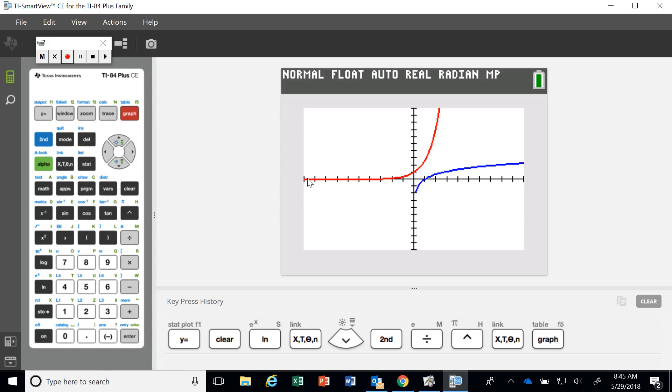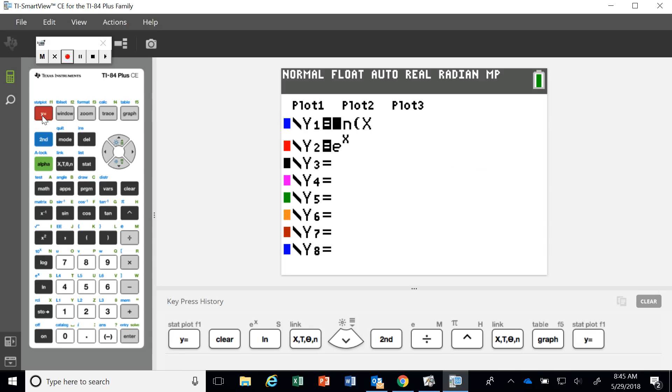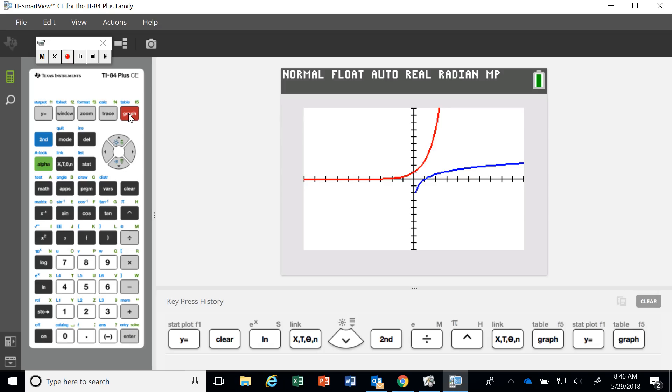The red function we have here is e to the x, because the natural log of x and e to the x, they should be inverse functions. Not should be, they are. So what I wanted to show here is that these are in fact inverses. So what does it mean in terms of a graph to be an inverse? What is the characteristics happening here?